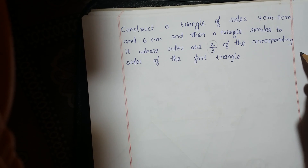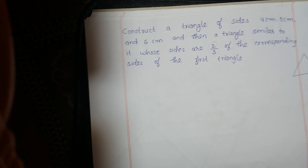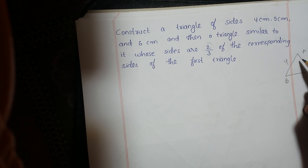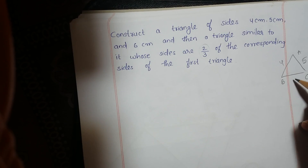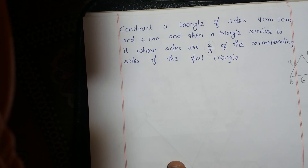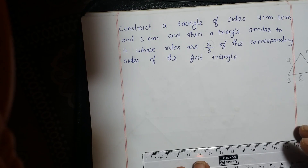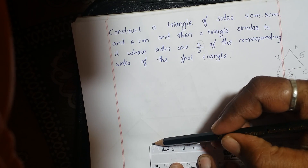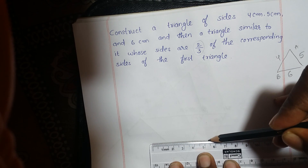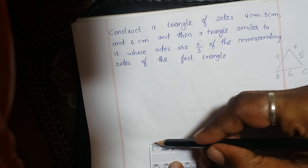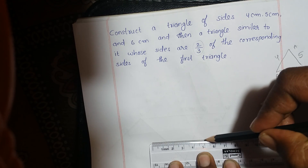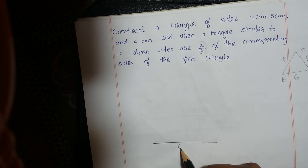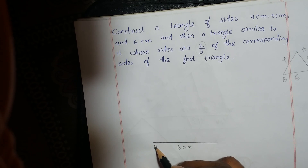First we will draw the rough sketch of the triangle. So ABC is a triangle in which AB is 4 cm, AC is 5 cm, and BC is 6 cm. We are going to draw triangle ABC, taking the base as BC with 6 cm. Draw a line segment of length 6 cm with the help of a scale, and label it BC.